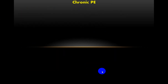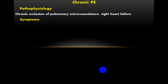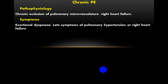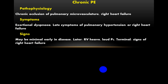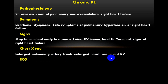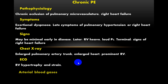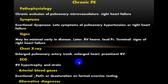The third type is chronic pulmonary embolism. Chronic occlusion of the pulmonary microvasculature leads to right heart failure. Patients present with exertional dyspnea, late symptoms of pulmonary hypertension, or right heart failure. Clinical signs may be minimal early in the disease; later, right ventricular heave and signs of right-sided heart failure appear. Chest X-ray shows large pulmonary artery trunks and an enlarged right ventricle. ECG shows right ventricular hypertrophy and right ventricular strain. Blood gases show exertional decrease in PaO2 or oxygen desaturation on formal exercise testing.